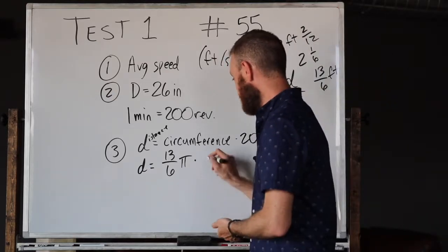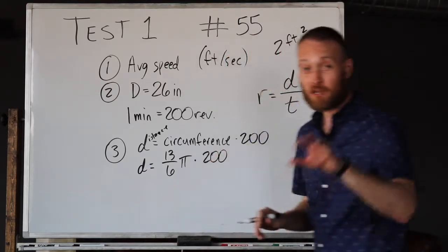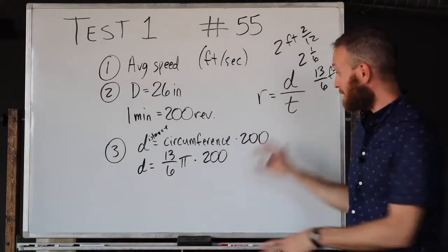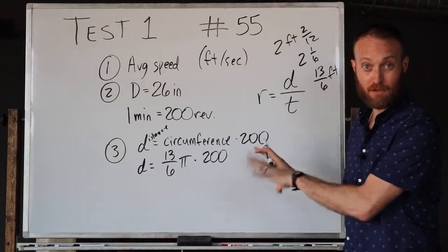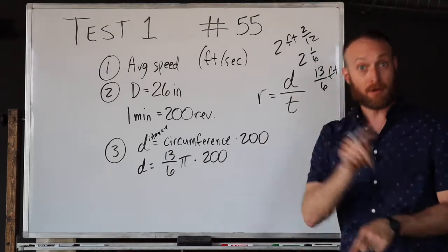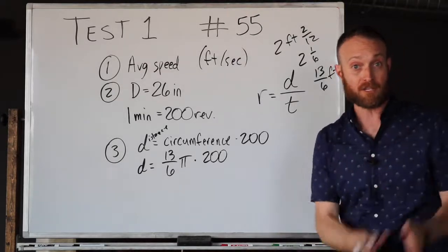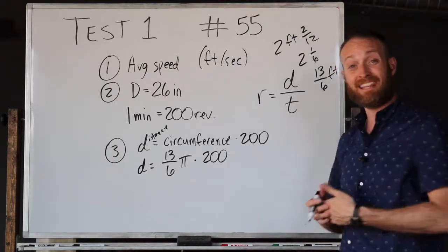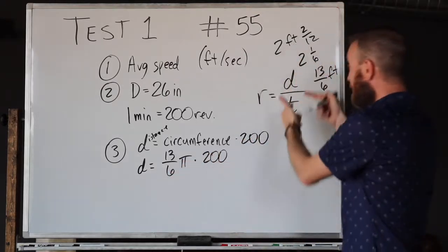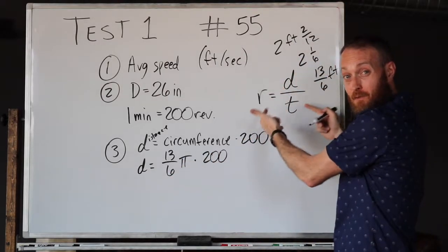So the circumference of the wheel with a diameter of 26 inches is actually 13/6 feet, and we multiply by π to get the circumference. Then we're going to take this and multiply it by the number of times that the wheel actually traveled around, which is 200, because that's going to give us the total distance.